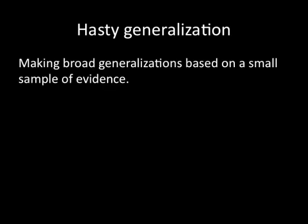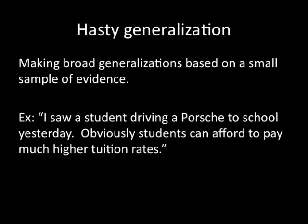The second fallacy is the hasty generalization — the idea of making broad statements based on a very small group of evidence. For example, if on my way to work I noticed a student who passed me in a brand new Porsche, I might argue to the Board of Trustees that we can raise tuition quite a bit because students obviously can afford much higher tuition. The problem is that one student driving a Porsche doesn't mean all students can afford a higher tuition rate. That kind of generalization is based on too little evidence to be sustained.